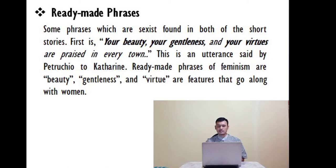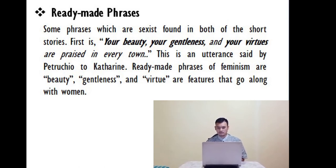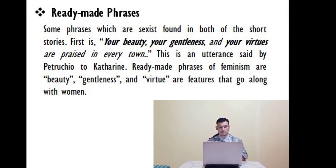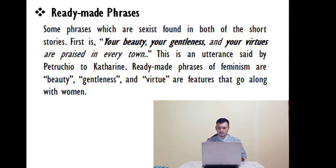From the syntactic level analysis, a ready-made phrase was found in The Taming of the Shrew: 'your beauty, your gentleness, and your virtues are praised' — an utterance said by Petruchio to Catherine. The ready-made phrases of feminism here are beauty, gentleness, and virtue — features associated with women. This is a kind of sexism in language found within The Taming of the Shrew.